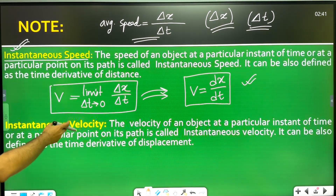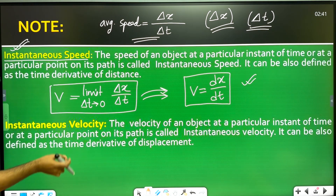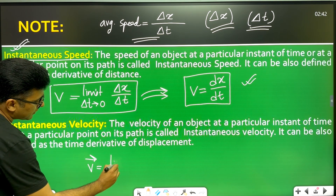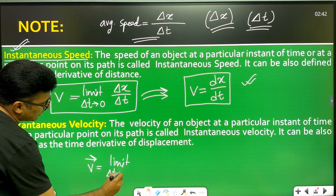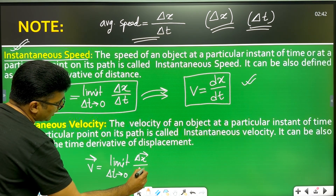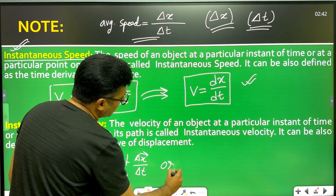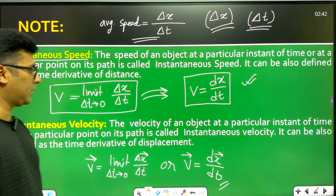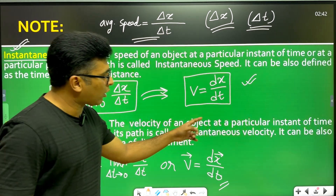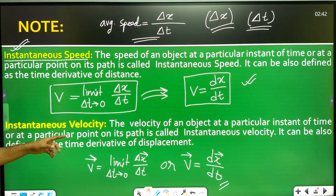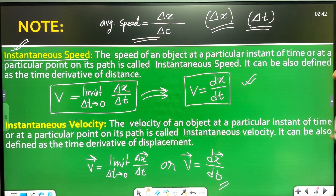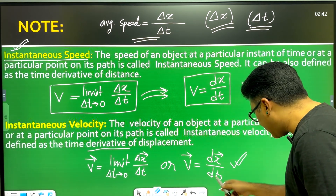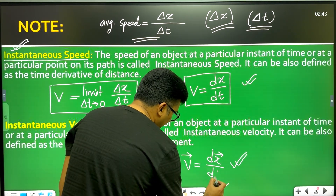Similarly, instantaneous velocity follows the same concept but as a vector quantity. Instantaneous velocity equals the limit as delta t tends to zero of the vector delta x divided by delta t. The velocity of an object at a particular instant of time or at a particular point on its path is called instantaneous velocity. It can also be defined as the time derivative of displacement, i.e., dx/dt as a vector.